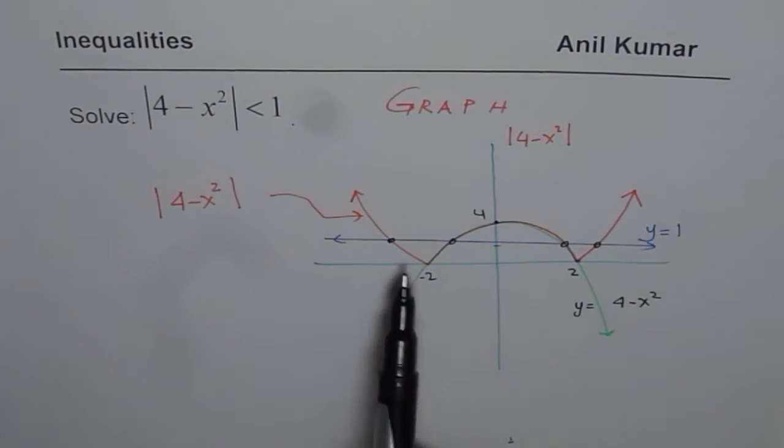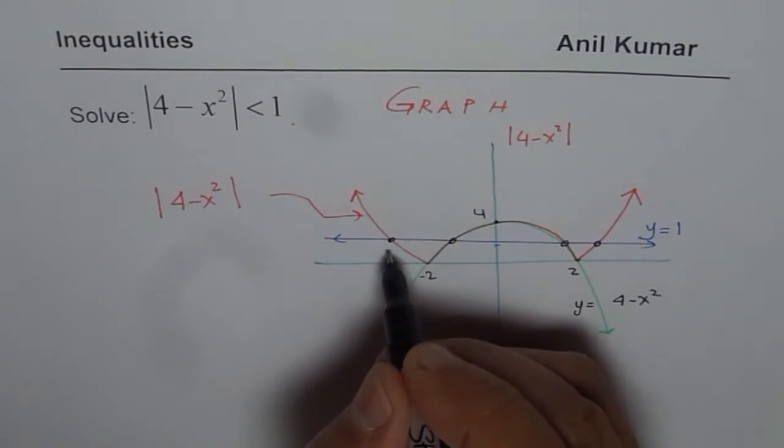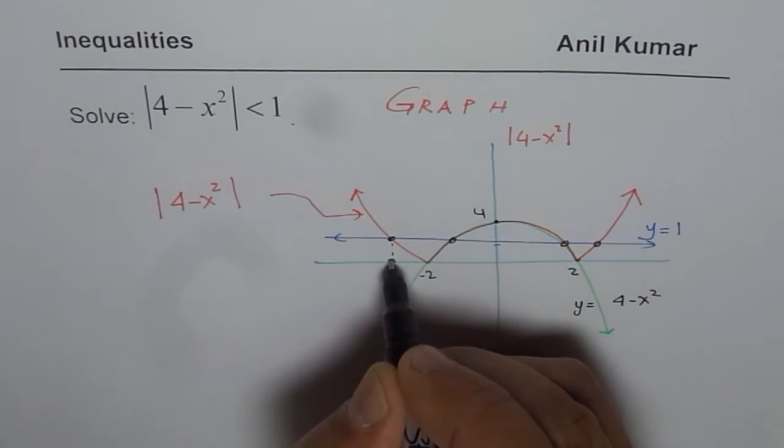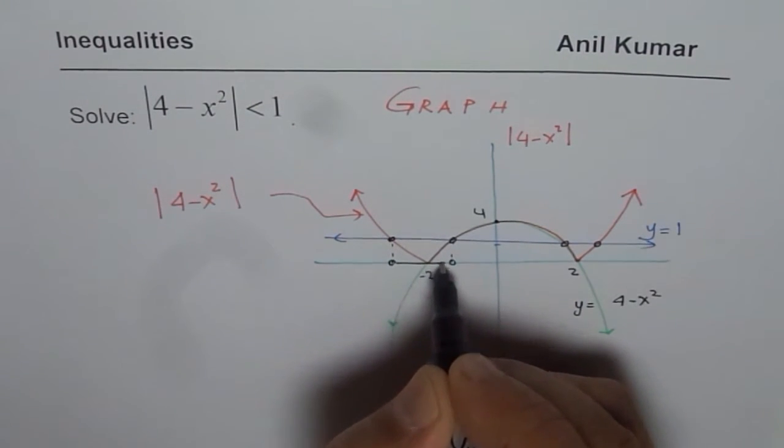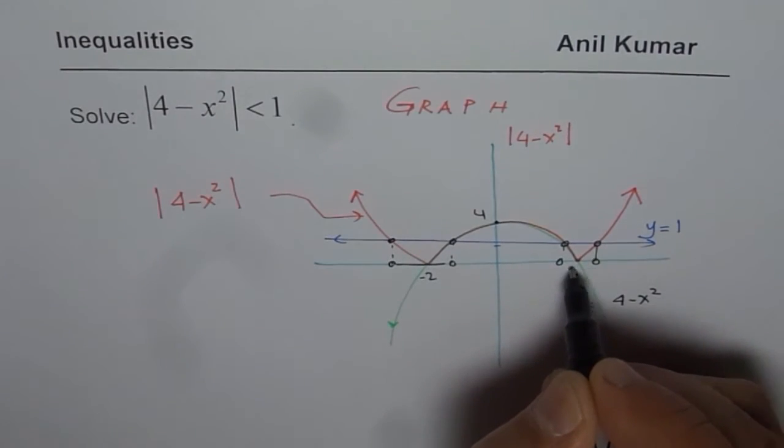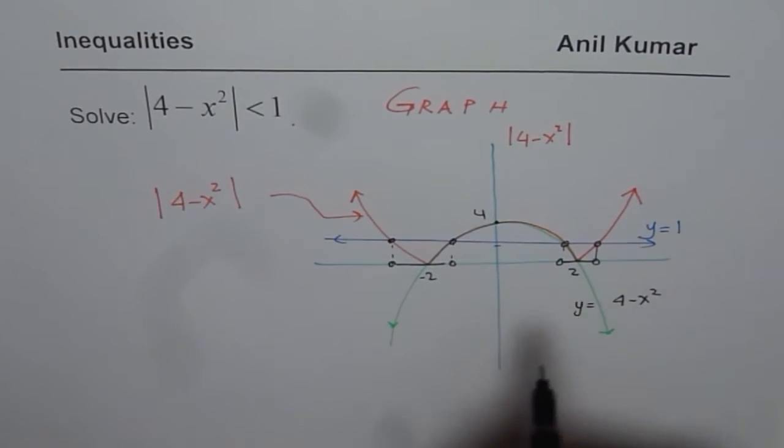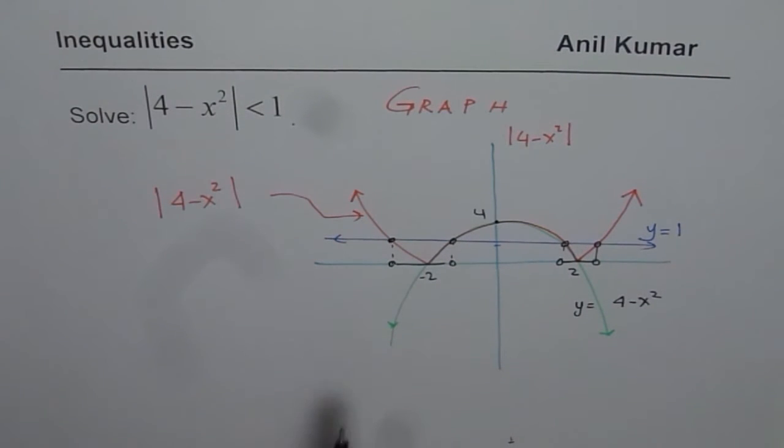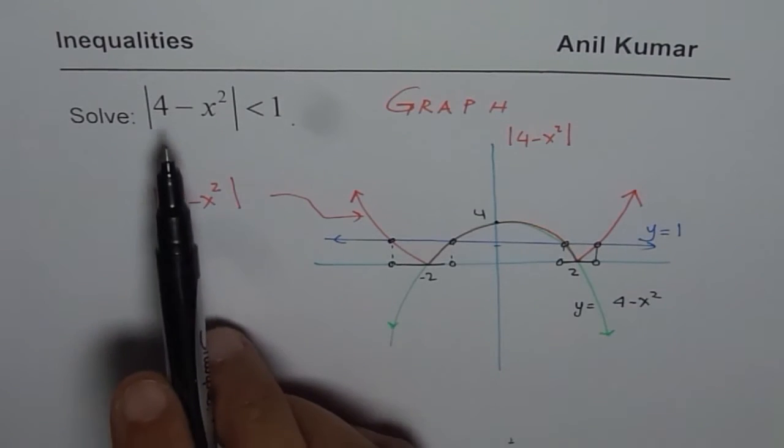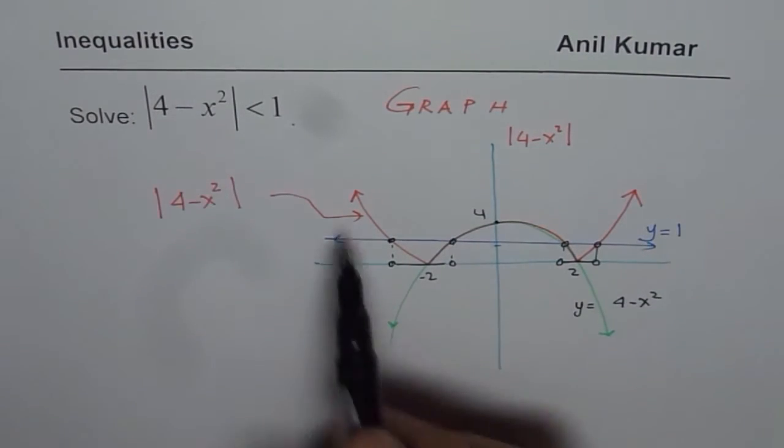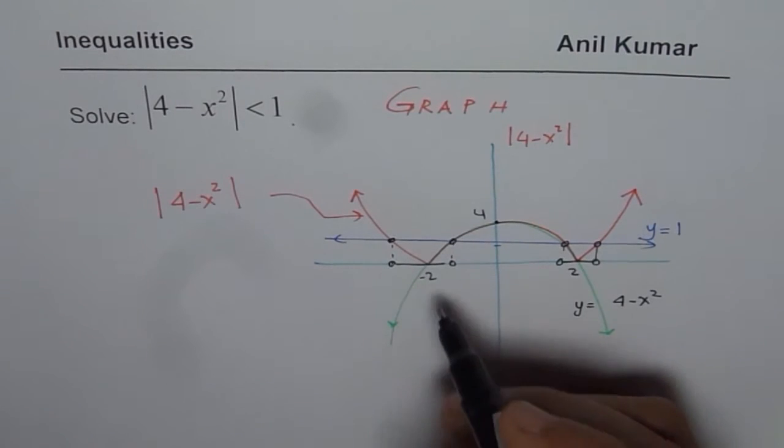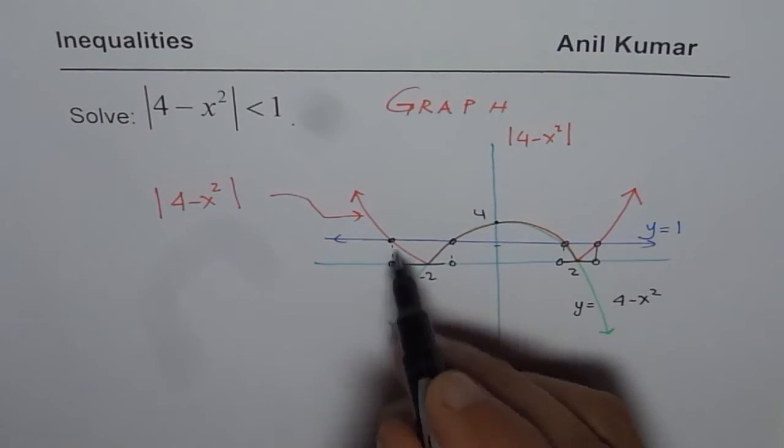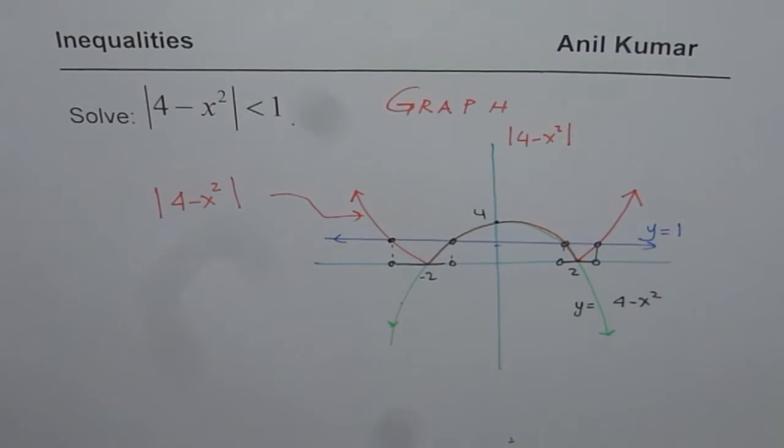Now when we say that this graph is less than this, then we know the solution should be the interval between these two and the interval between these two. Now this is not to the scale but this has to be very symmetric. We know it is an even symmetric function. So that is what we are left with. So basically if you see we are looking for values 4 minus x squared equals to plus 1 or minus 1. So if it was originally here this point was kind of reflected.